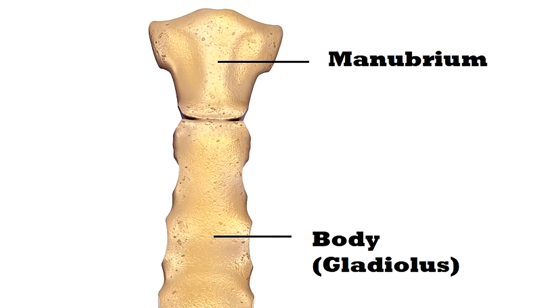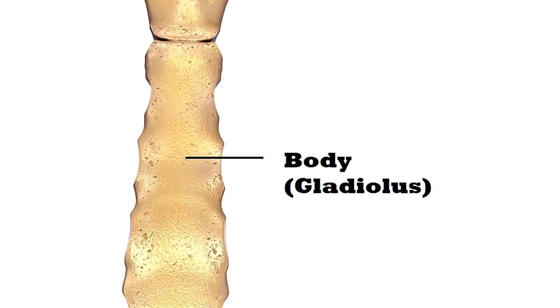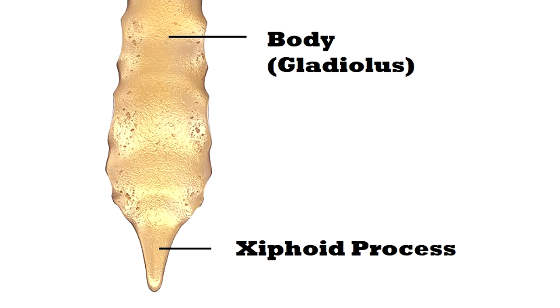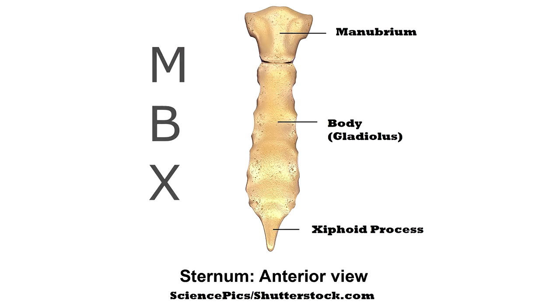The sternum has three major sections that you need to know for your anatomy exams: the manubrium, the body also called the gladiolus, and the xiphoid process. The letters MBX, just like the Honda motorcycle brand, can help you remember the order of the parts of the sternum from top to bottom.